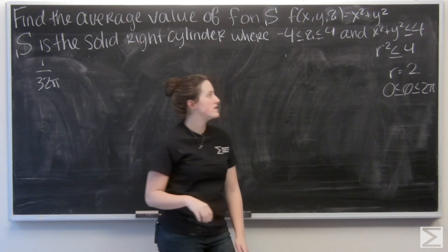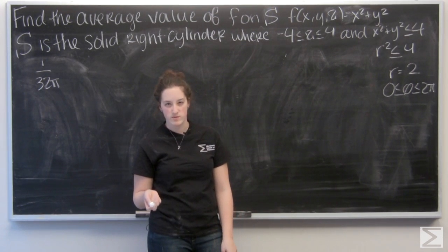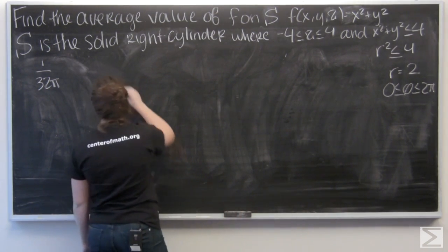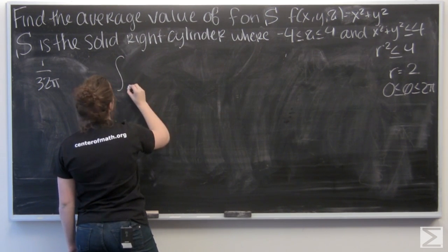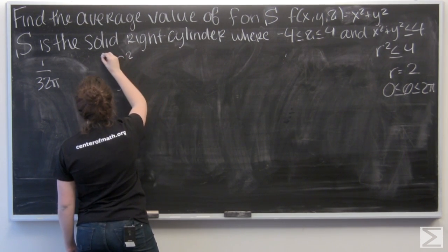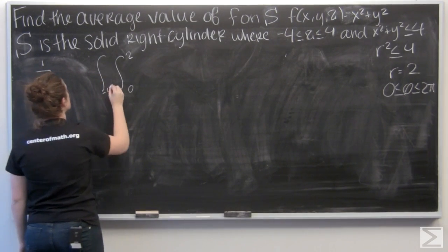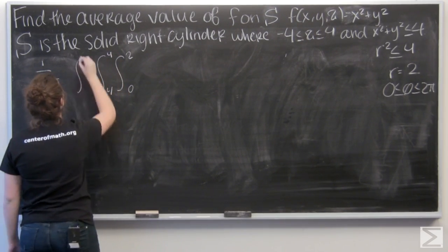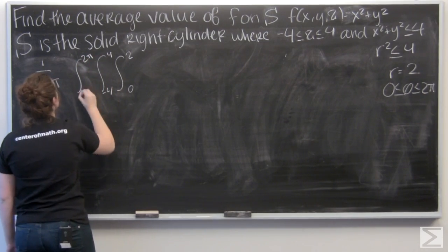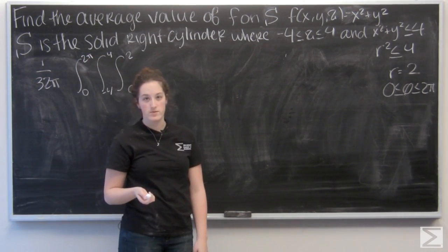So all the bounds here are constants. But I think I'm going to integrate with respect to r first. So that goes from 0 to 2. And then z, negative 4 to 4, and theta from 0 to 2 pi.